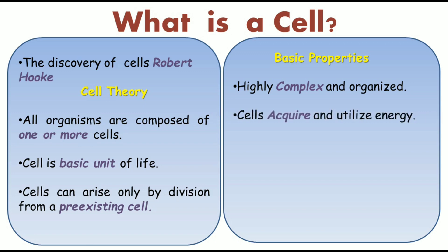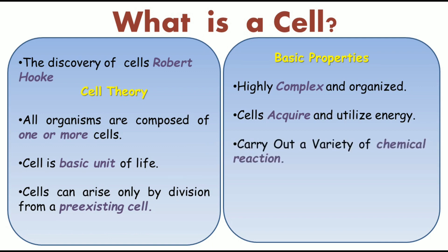Cells acquire and utilize energy. Every single cell needs energy to perform its own functions, like DNA replication, protein synthesis, or performing metabolic pathways — everything requires energy. They acquire energy through metabolic pathways, producing ATP molecules that are reutilized for different mechanisms. That is a basic property of a cell.